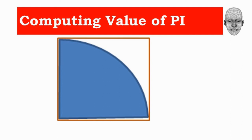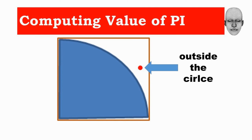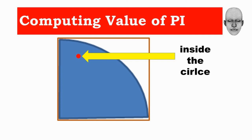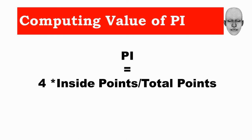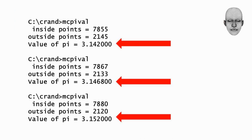We look at a very simple example of a Monte Carlo simulation — calculating the value of π. We inscribe a quarter circle in a unit square, then generate random points where x and y are each random numbers in [0,1), and check whether each point is inside or outside the circle. The ratio of the quarter circle's area to the square's area equals the ratio of inside points to total points, which equals π/4. So we estimate π as 4 × (inside points / total points). Running the simulation gives approximate values of 3.142, 3.1468, and 3.152.